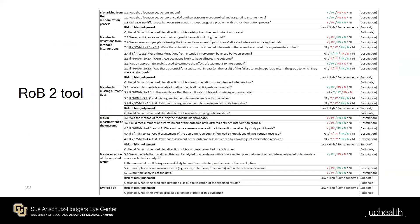Here are the five domains of risk of bias with their signaling questions. You answer each question, provide quotes supporting your judgment, and the answers map out to the overall risk of bias assessment.